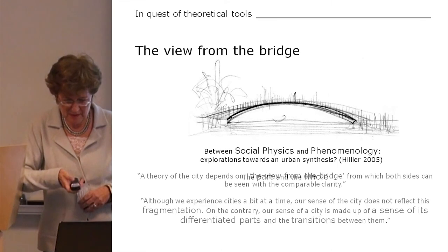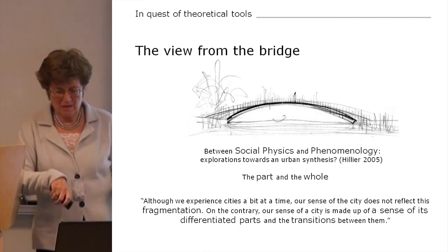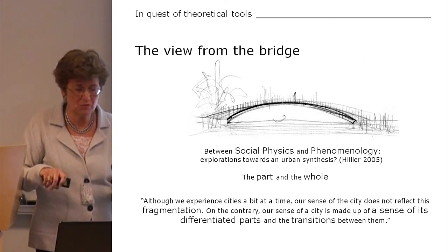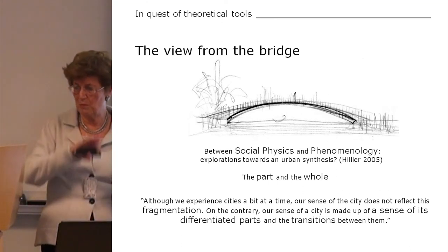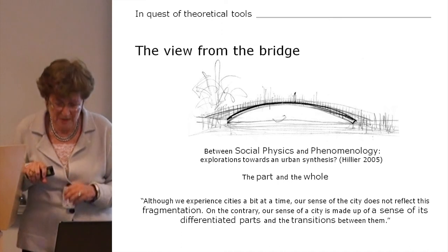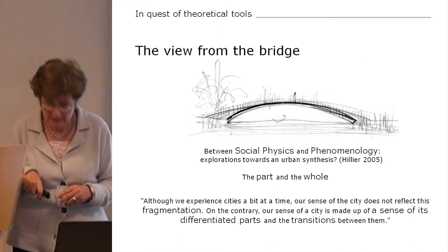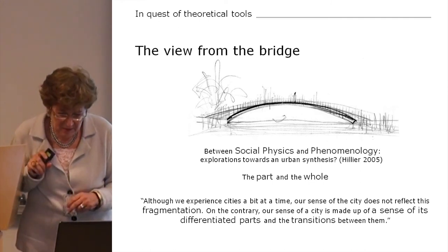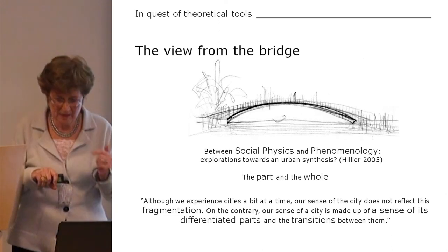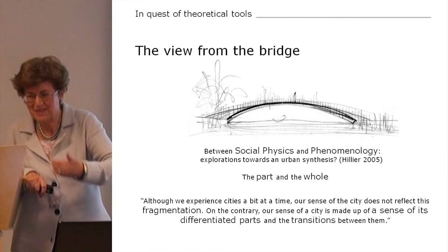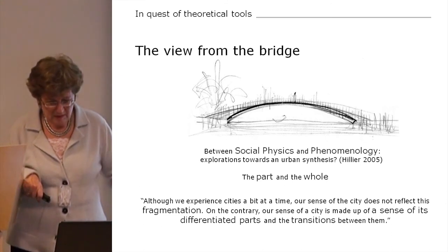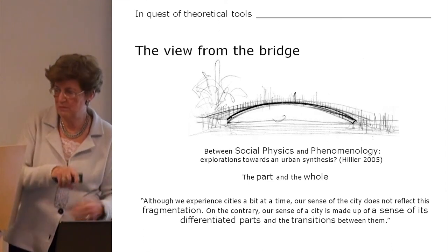One of the things I realized is that both sides are very focused on the concept of the part and the whole — in different ways, but they are very much concerned with how we perceive the part and the whole. Helio again says that although we experience cities a bit at a time, our sense of a city does not reflect this fragmentation. On the contrary, our sense of a city is made up of a sense of its differentiated parts and transitions between them. Differentiation of parts and transitions between them are two key words in what I will try to present here.